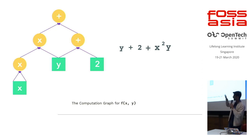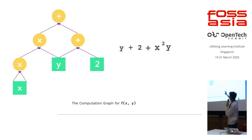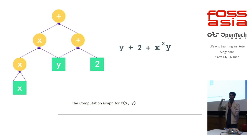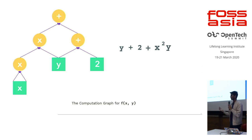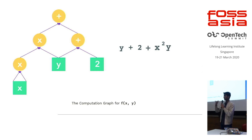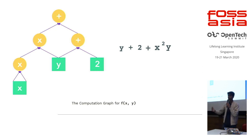At a high level, this is what a computation graph is: we have a complicated equation, we break it up into individual steps to simplify the problem, while ensuring we finally get to that equation at the end in a very organized method.